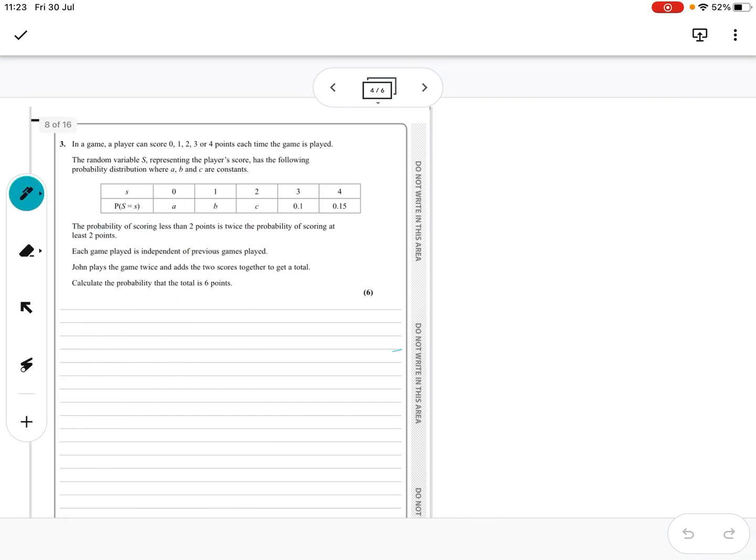So this question: in a game, a player can score 0, 1, 2, 3 or 4 points each time the game is played. The random variable S representing the player's score has the following probability distribution where A, B and C are constants. The probability of scoring less than 2 points is twice the probability of scoring at least 2 points. Each game played is independent of previous games played.